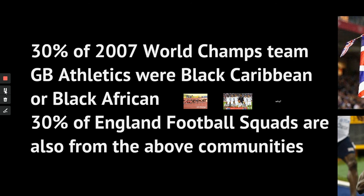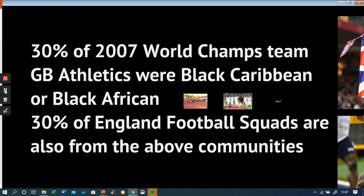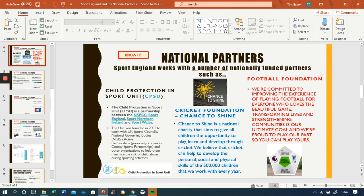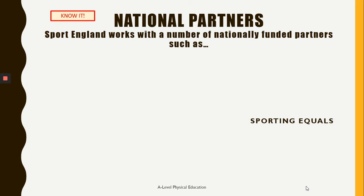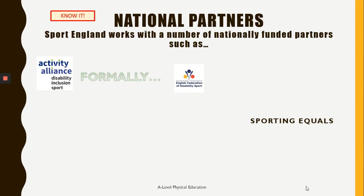I'll leave you with this particular fact. Think back to 2007: 30% of the World Championship athletics team that went to the World Championships was from a Black Caribbean or Black African background, and 30% of the England football squad are also from those communities. Ask yourself why those particular sports do well from those particular communities. Your homework, as stated earlier, is to research the Activity Alliance — who they are, what they do, and who they affect — and to do the same for Sporting Equals. You've had a clue from the video I showed you. How those national partners work with Sport England is really important. See you again on Friday.